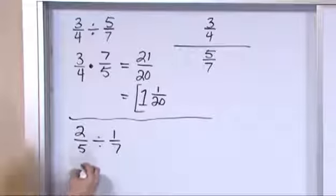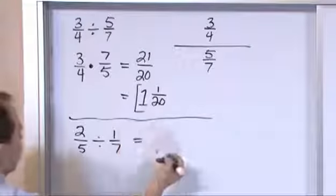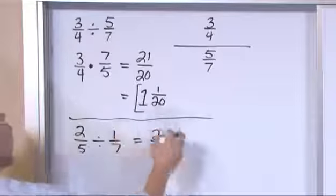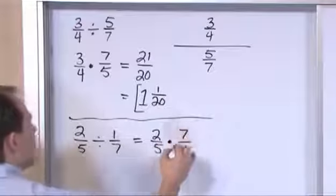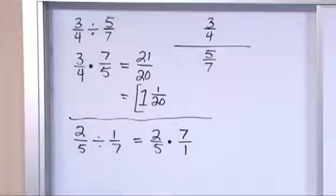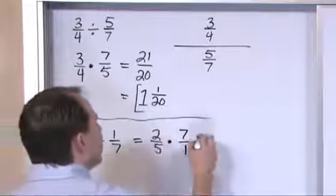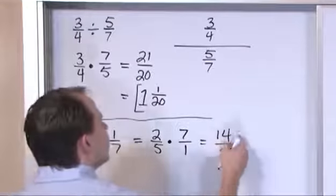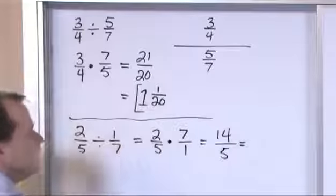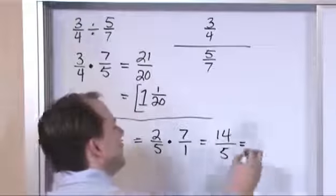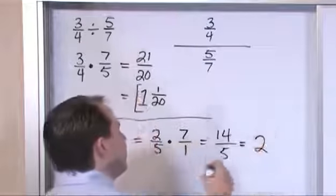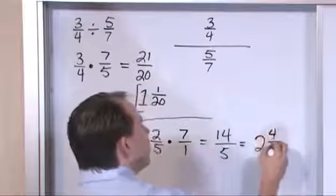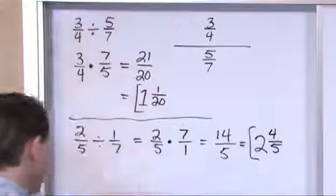All you do is rewrite it — put an equal sign — 2 fifths, change this division into a multiplication, turn the second fraction over: 7 over 1. And so we just proceed as normal. 2 times 7 is 14, 5 times 1 is 5. But this is improper, so we'll divide it back out again. 5 times 2 is 10, 5 times 3 is 15, so it can only go 2 times. 5 times 2 is 10. The difference between 14 and 10 is 4. We write it over 5. So 2 and 4 fifths — that's the answer.